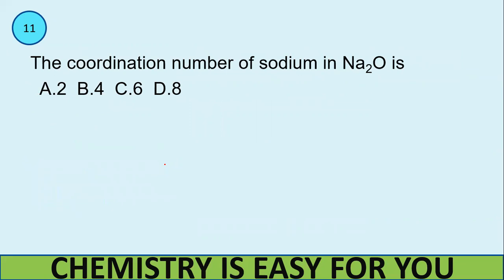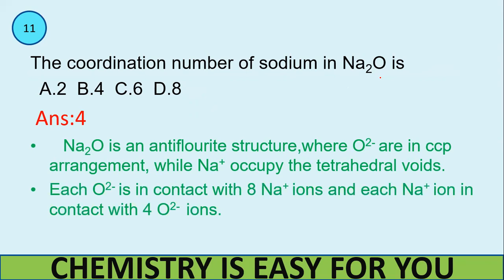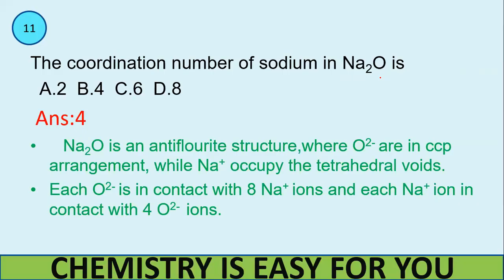Next question, the coordination number of sodium in Na2O is, so the coordination number is 4. Na2O is called as an anti-fluorite structure. In this, O²⁻ are in CCP arrangement and Na⁺ occupies the tetrahedral voids. In this case each of the O²⁻ is in contact with 8 Na⁺ ions and each Na⁺ ion is in contact with 4 O²⁻ ions. Therefore the coordination number is 4. So that's all we have discussed these many questions here.